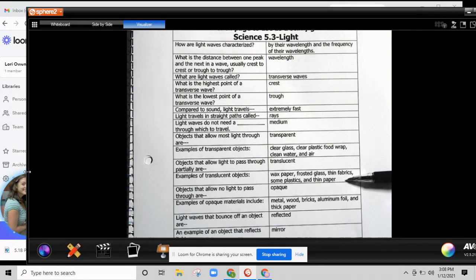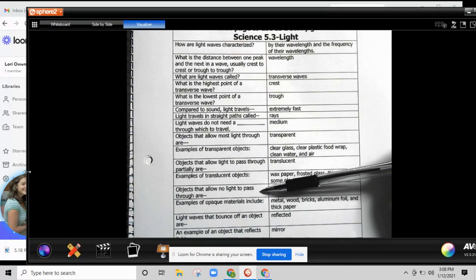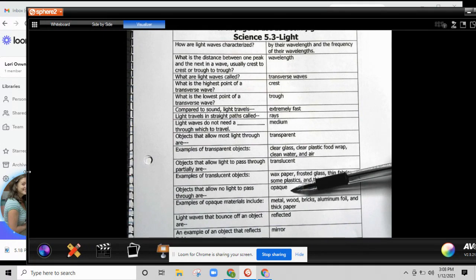Objects that allow no light to pass through are opaque. Examples of opaque materials are metal, wood, bricks, aluminum foil, and thick paper.